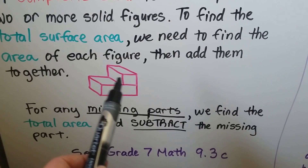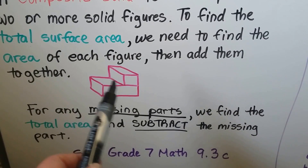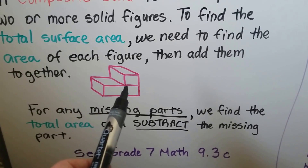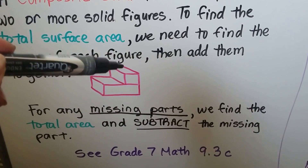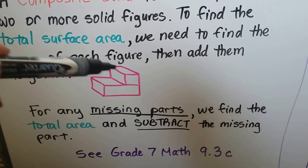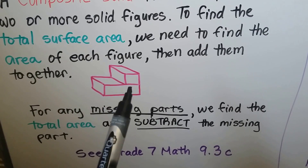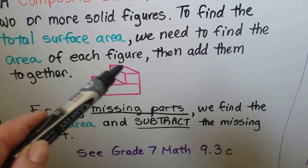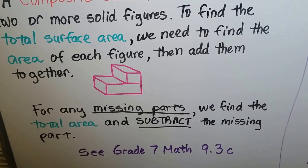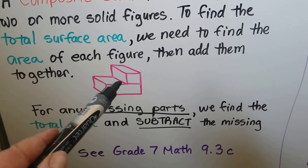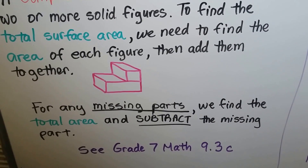Underneath this long skinny box is a surface area that's not showing. If we found the total surface area for this long skinny stick-of-butter-looking one, we can't count what's underneath it. It's almost like it would only have one base — just the top — because what's in between these two shapes is not a surface area. It's not on the surface.